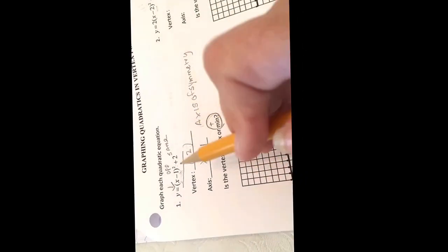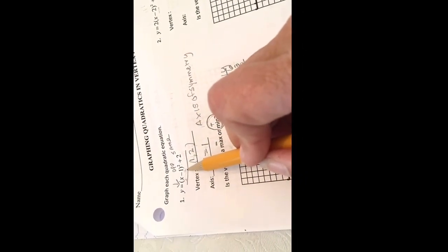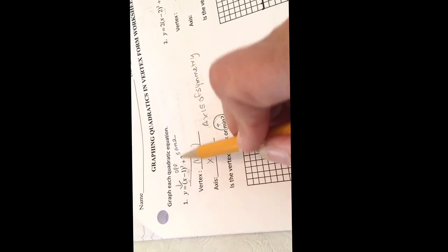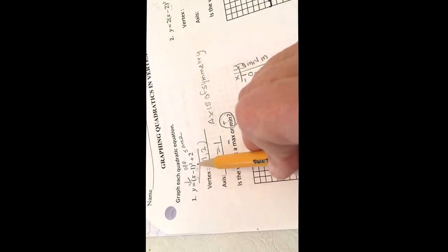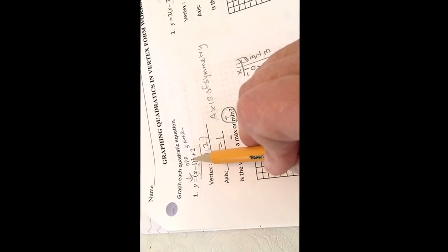This is our vertex here at 1, 2. Then we do 2. 2 minus 1 is 1. 1 squared is 1. 1 plus 2 is 3. 3 minus 1 is 2. 2 squared is 4. 4 plus 2 is 6.